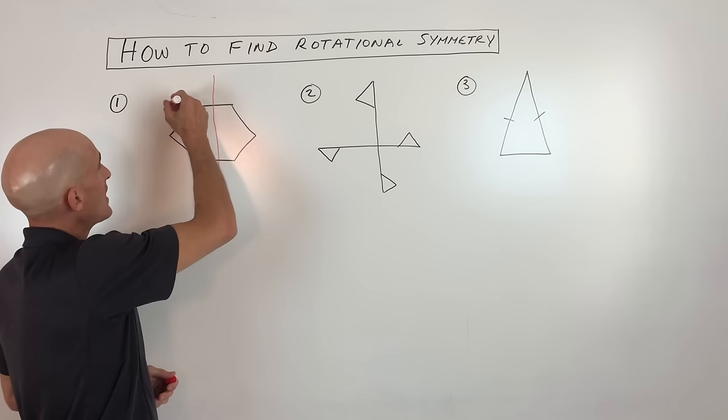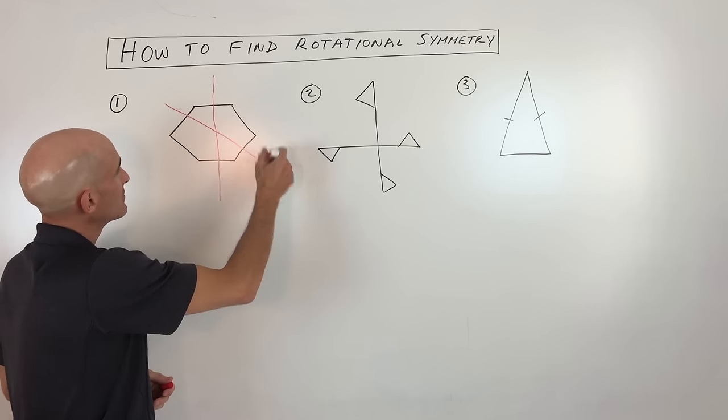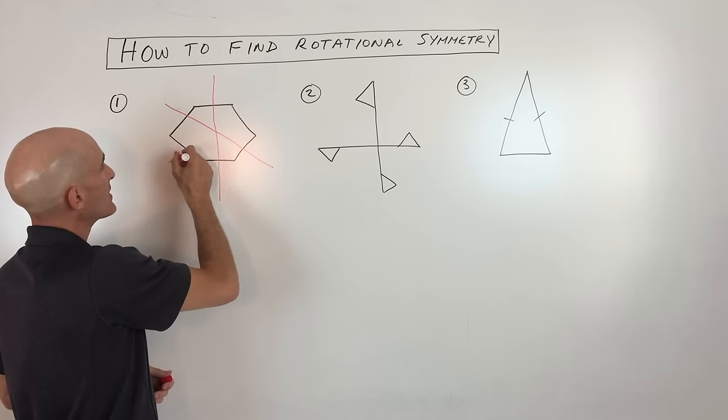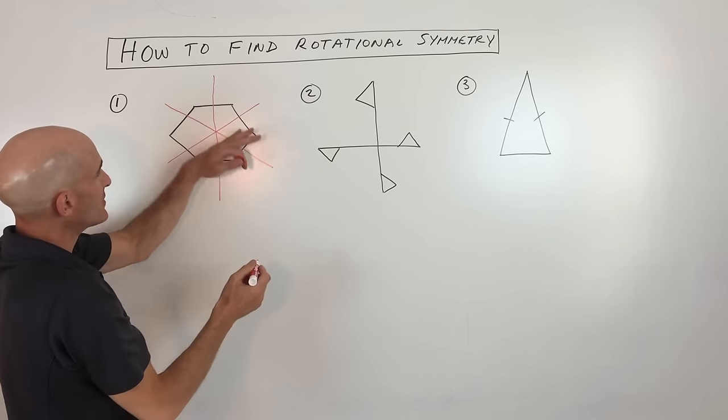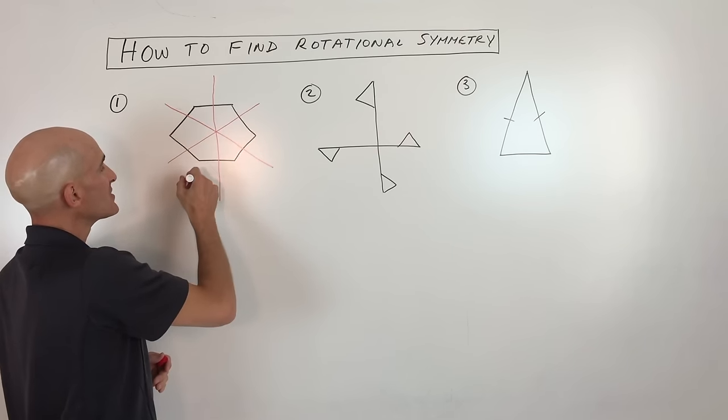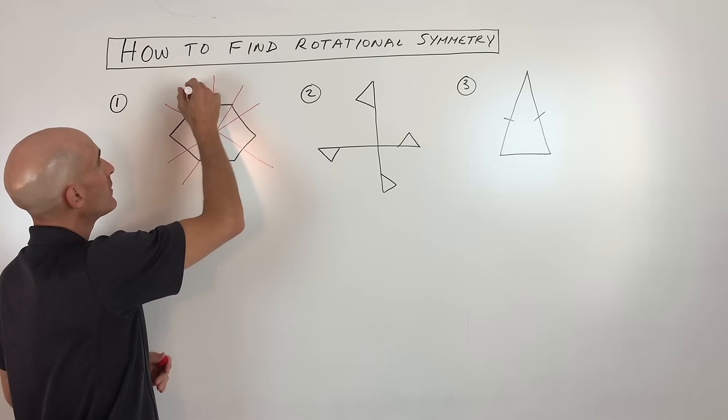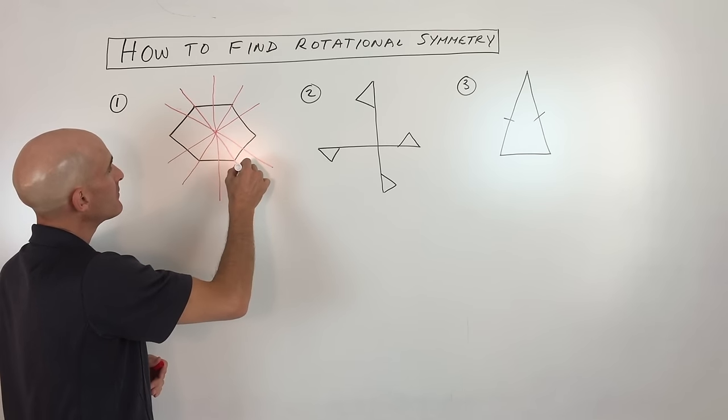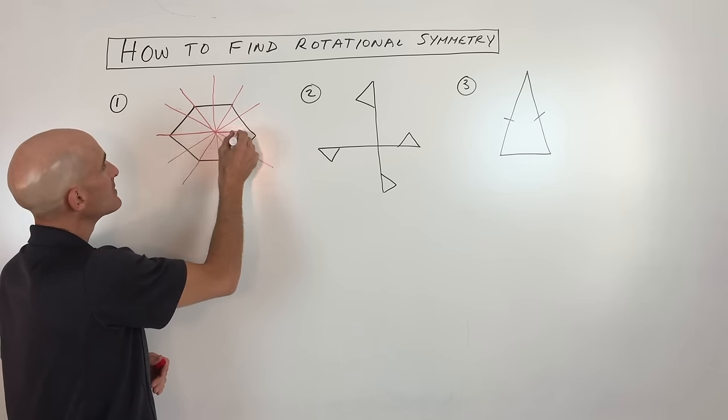but you could also draw a line of symmetry like this. We could fold it this way. You could draw a line of symmetry like this, you could fold it this way, and you can also go through the vertices like so. So that would be 4, 5, and 6.